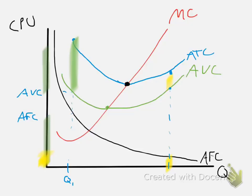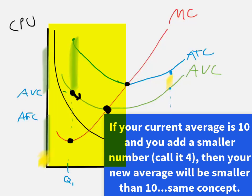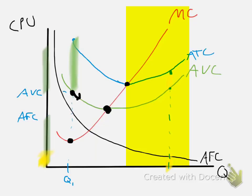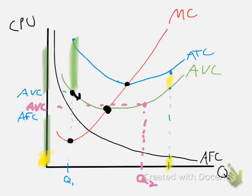Notice that average total cost and average variable cost each intersect marginal cost at their minimum points. To the left of that intersection, at a quantity like Q1, marginal cost is below average variable cost — so producing another unit adds a small number to the average, bringing it down. Once marginal cost rises above average variable cost, at a quantity like Q2, the marginal cost is much higher than the average variable cost, so producing another unit adds a bigger number to the average, bringing it up.